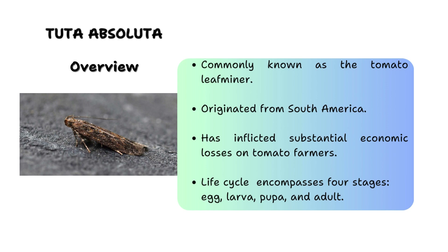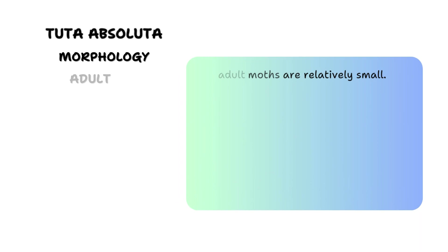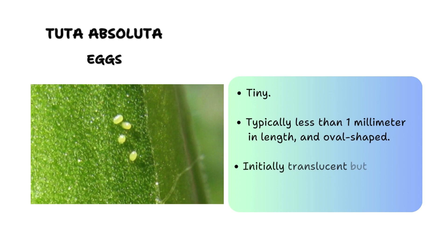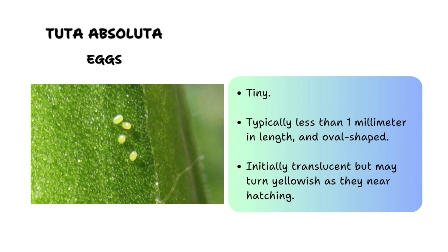Briefly looking at the morphology of the Tuta absoluta adult: the adult moths are relatively small, with a wingspan of about seven to nine millimeters. They have a distinctive brownish-gray coloration with white and yellow markings on the wings. The fore wings are narrow and elongated, while the hind wings are broader and slightly rounded. The body is slender and the antennae are long and thread-like, enabling effective flight and host plant location for egg laying.